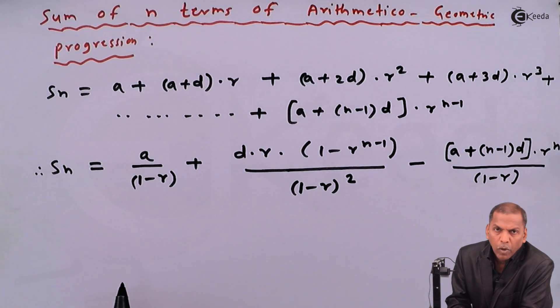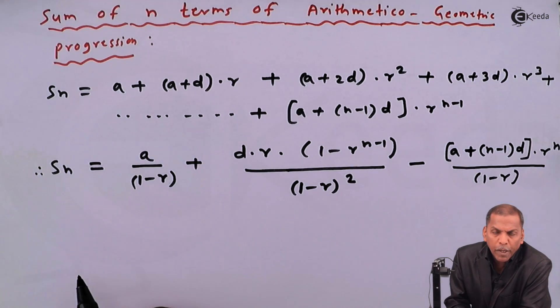In this formula, a represents first term of AP, d represents common difference of AP, r represents common ratio of GP provided r is not equal to 1.